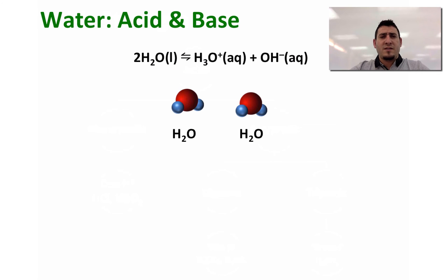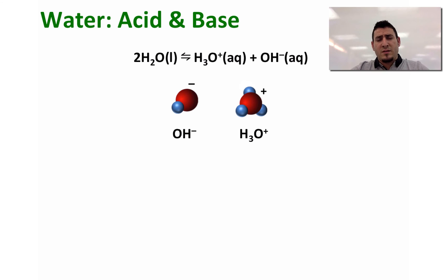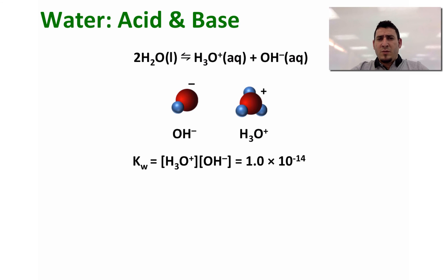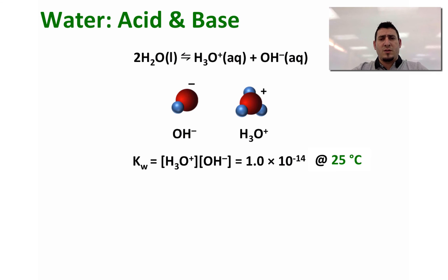Water is considered both an acid and a base at the same time. A water molecule can transfer one of its hydrogens to another water molecule — the one that donates the H⁺ is the acid, and the one that accepts it is the base. This is called the autoionization of water. The equilibrium constant for water dissociation is called Kw, equal to the product of the concentrations of H₃O⁺ and OH⁻, which equals 1.0 × 10⁻¹⁴ at 25°C. This value changes when the temperature changes.